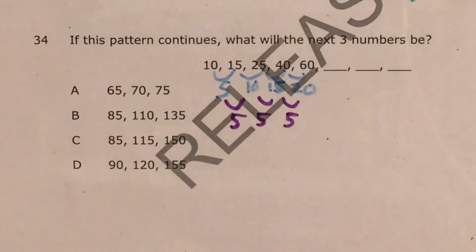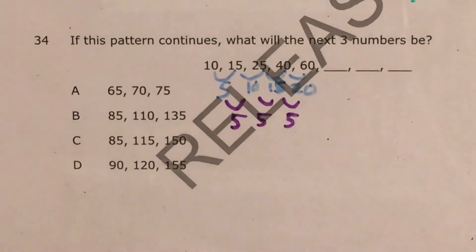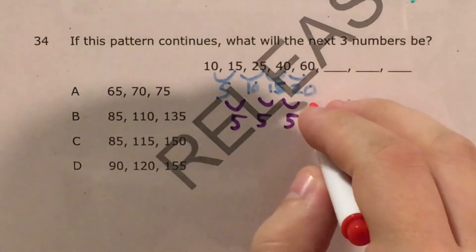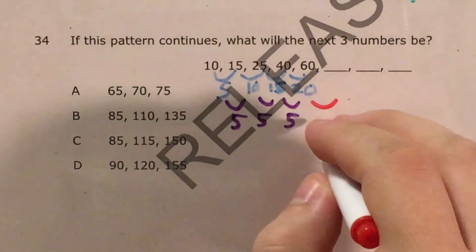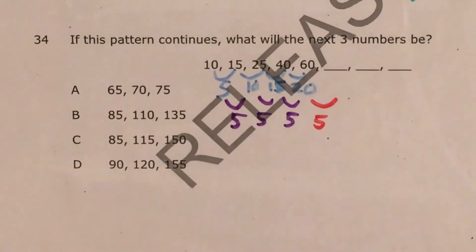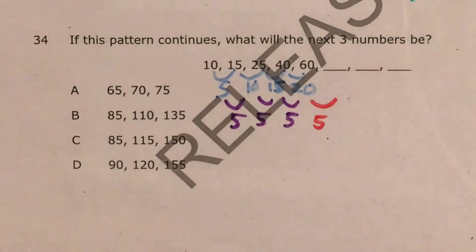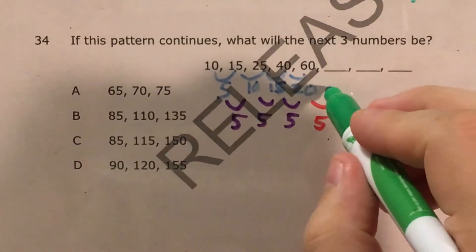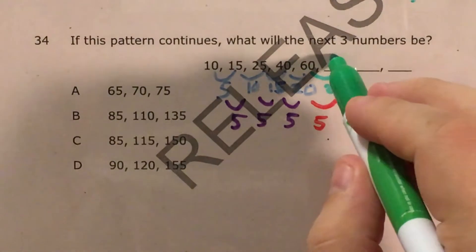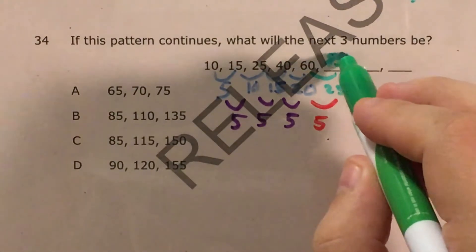But now, we need to go ahead and continue this pattern. So I'm going to say that we're adding 5 to this number here. 20 plus 5 is 25. And 60 plus 25 is going to get us 85.